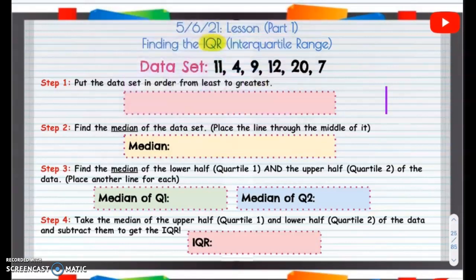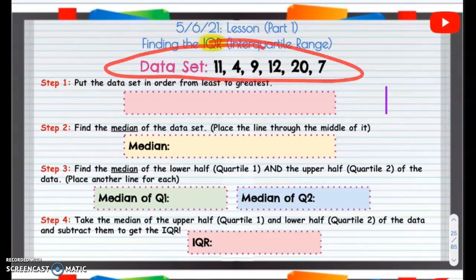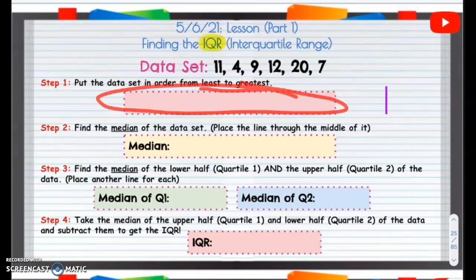But to find it, we're first going to look at this data set, and we are going to put it in order from least to greatest. So in this box, we're going to put these numbers in order from least to greatest.